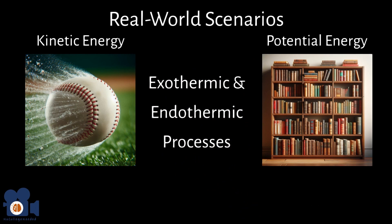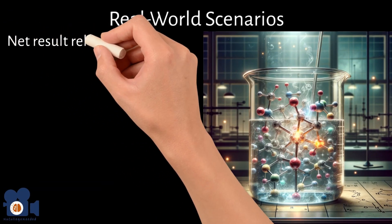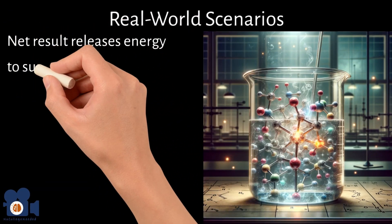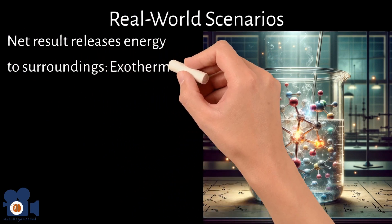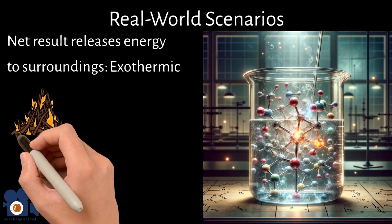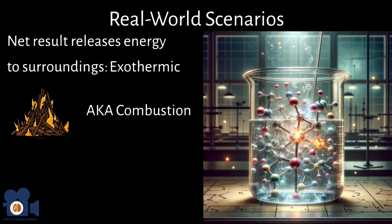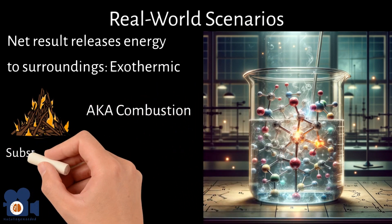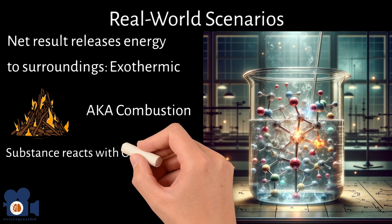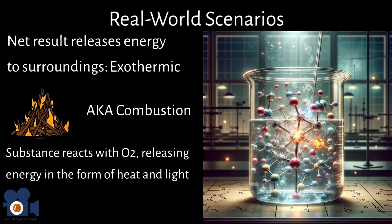Picture a chemical reaction where bonds are broken and formed. If the overall result releases energy into the surroundings, it's an exothermic process. A great example of this is fire — also known as combustion — a type of exothermic reaction which occurs when a substance reacts with oxygen, releasing energy in the form of heat and light.